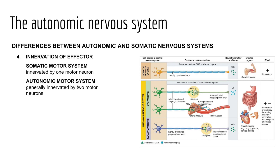Finally, there is a difference in the innervation of the effector. In the somatic motor system, one somatic motor neuron is associated with an effector. In contrast, in the autonomic motor system — because it's composed of two divisions, sympathetic and parasympathetic — the effectors have two types of innervation: from a motor pathway associated with the sympathetic branch, and from one associated with the parasympathetic branch. There are a few exceptions where some effectors are innervated only by sympathetic fibers, but generally we see dual innervation.